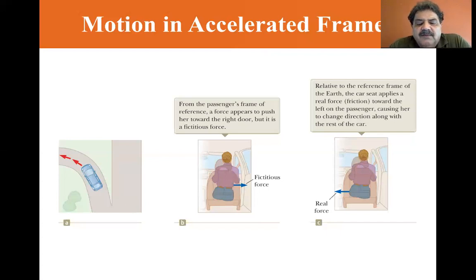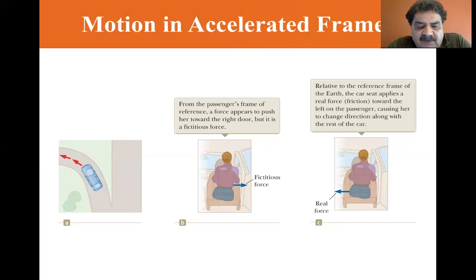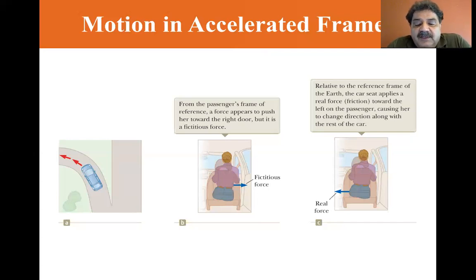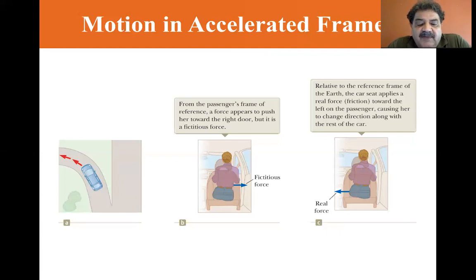The force toward the center of curvature acts on the passenger, and she moves in a curved path along with the car. This force equals the force of friction between her and the car seat. When the friction force is not large enough, the seat follows a curved path while the passenger tends to continue in a straight line. From the point of view of the car, the passenger slides to the right relative to the seat. Eventually she encounters the door, which provides a force large enough to enable her to follow the same curved path as the car.